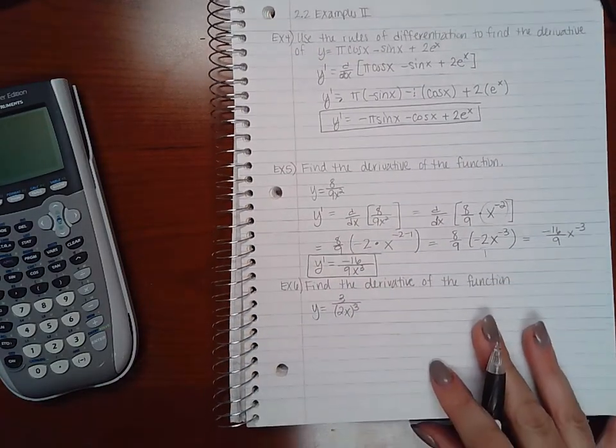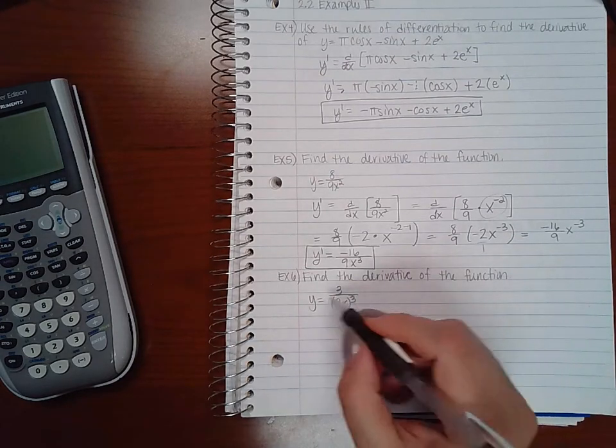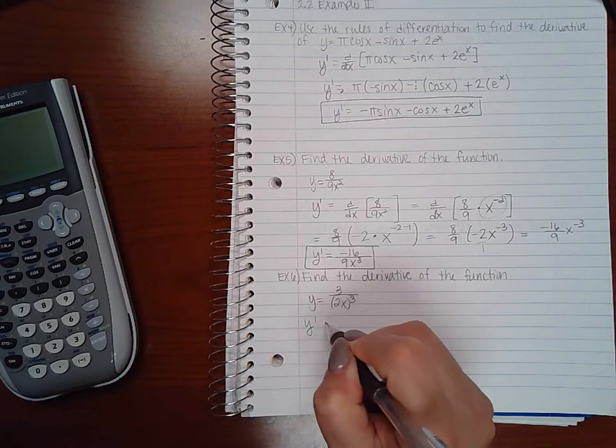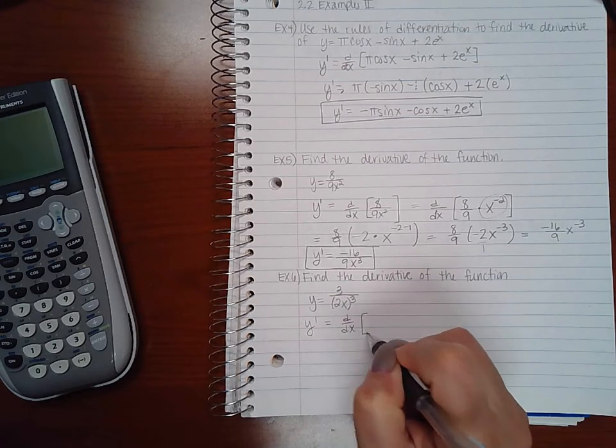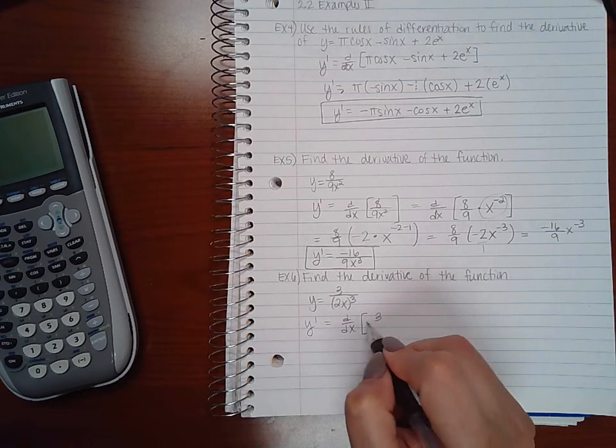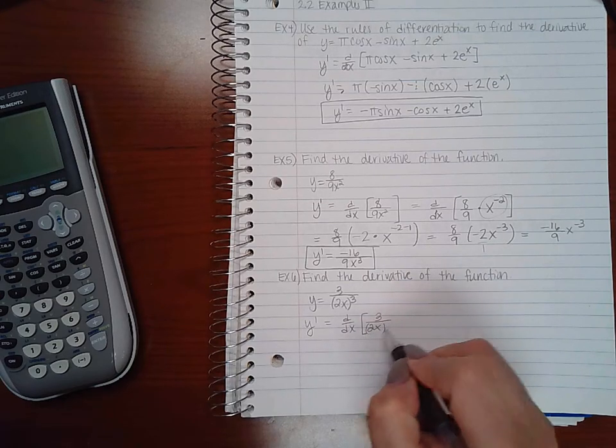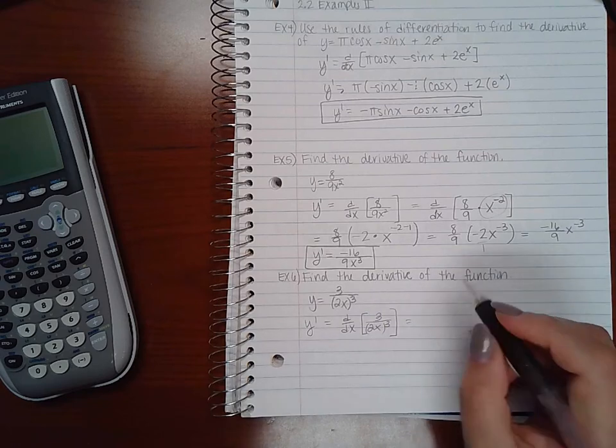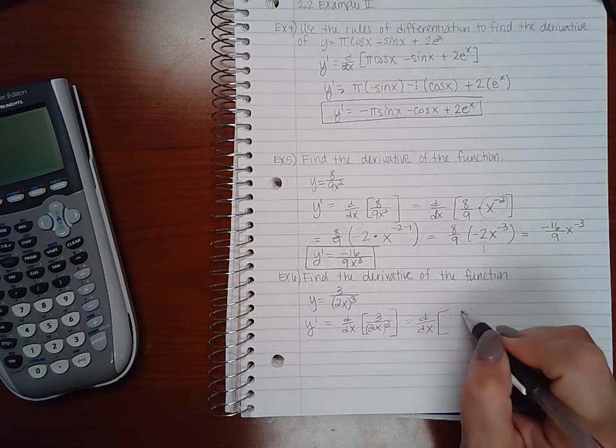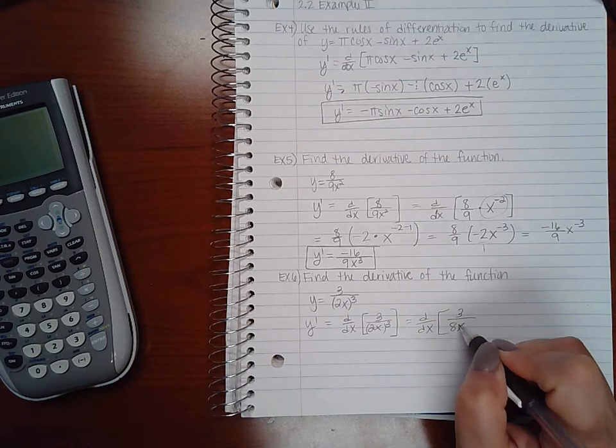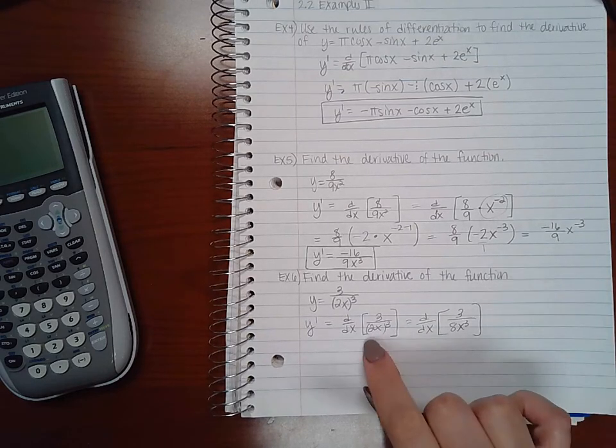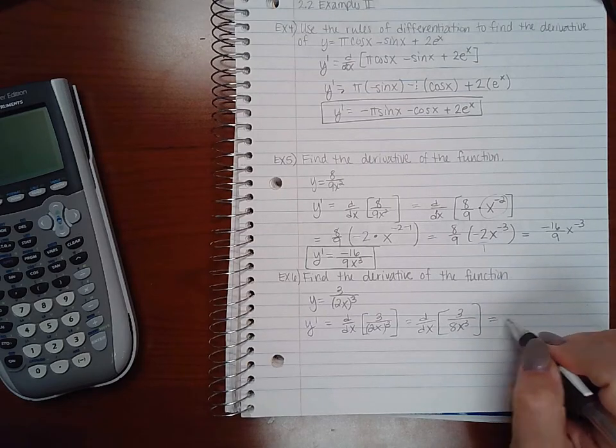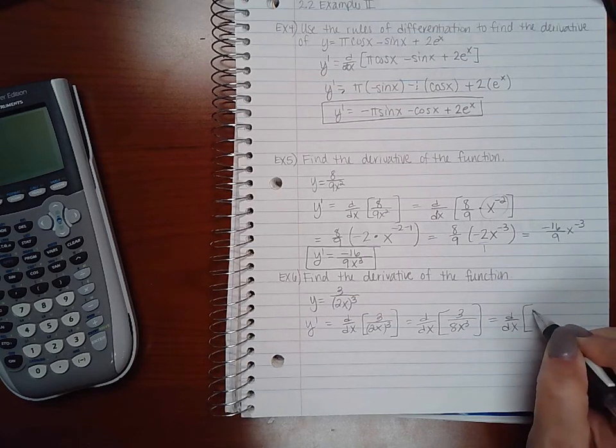Example 6 is very similar. I'm going to rewrite this as y' equals the derivative of 3/(2x)³. If I rewrite this, that is 3/(8x³), because 2³ is 8 and x³ is x³. Then I'll do the same process I did before.